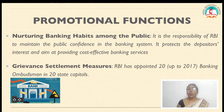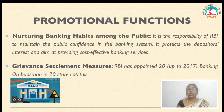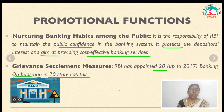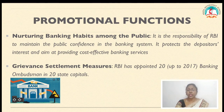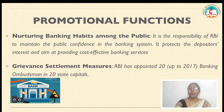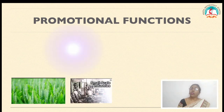The next promotional function is grievance settlement measures. Grievances mean problems or complaints against a company or organization. As of 2017, RBI has appointed 20 ombudsmen to investigate complaints against banks. The banking ombudsman scheme is a speedy and inexpensive forum for resolution of customer complaints relating to services rendered by banks. Whenever we have problems regarding our banking accounts, such as amounts wrongly debited or credited, we can raise grievances, and these are addressed by the RBI.